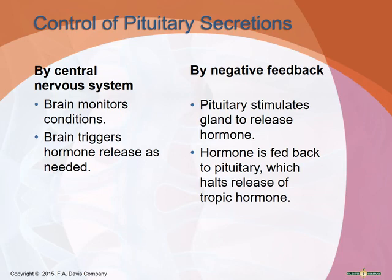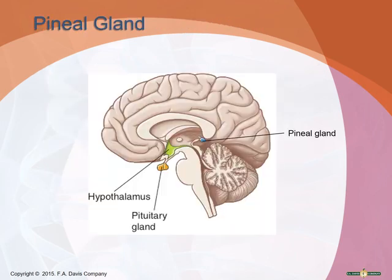Oxytocin also stimulates stronger contractions, making it a positive feedback system. ADH, or antidiuretic hormone, also known as vasopressin, acts on the kidneys to reduce urine volume and prevent dehydration by causing the kidneys to reabsorb water back into the bloodstream. Pituitary hormone secretion occurs in pulses and is controlled by the central nervous system and by target organs through negative feedback — for example, cold stimulates the hypothalamus to release thyrotropin-releasing hormone, which triggers thyroid hormone release, stimulating metabolism and warmth, while also inhibiting further thyroid-stimulating hormone release.